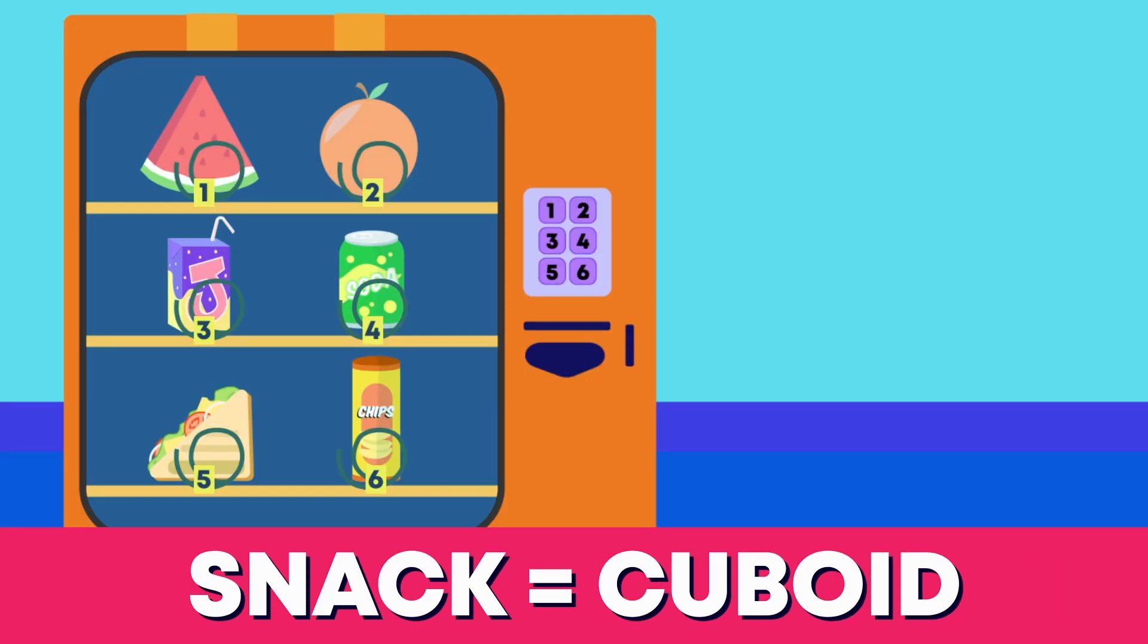Which item should I pick to get a cuboid? The juice box is right!